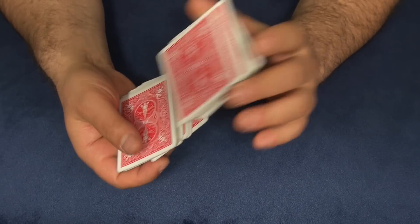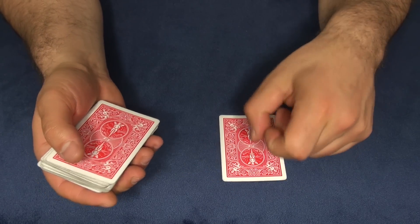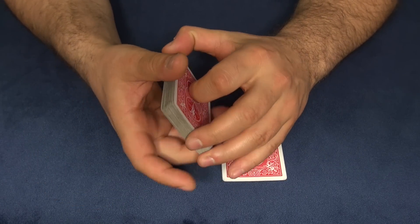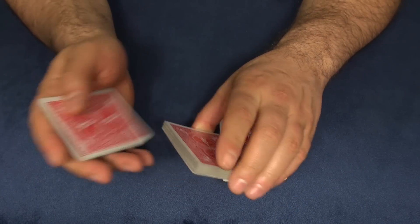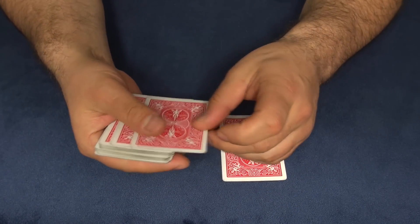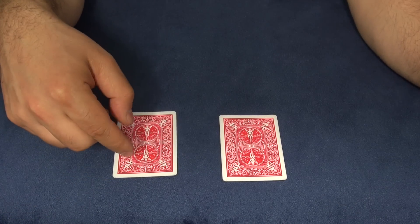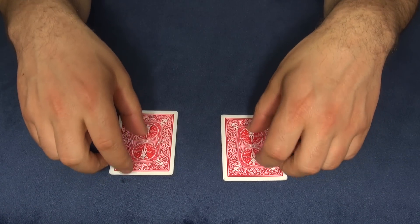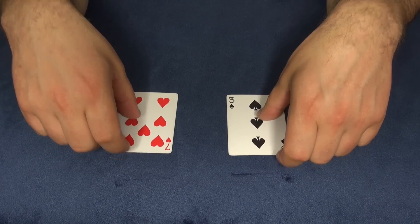They shuffle the cards and they pick one card. For example, this one. And then you tell them that you need to pick a card too, and you can let them do it for you. So they shuffle the cards again and they pick one card for you, but they shouldn't see your card and you shouldn't see their card.